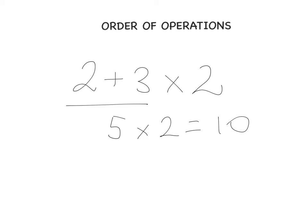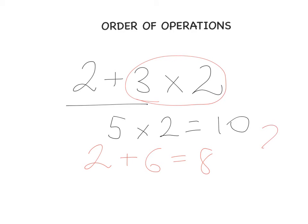But another one might say, oh no, we need to do multiplication first. So 3 multiplied by 2 is 6, and 2 plus 6 gives you 8. And which answer is right? It's very important to understand that there is an order of operations in maths — what is BIMDAS? And today we're going to talk about BIMDAS.